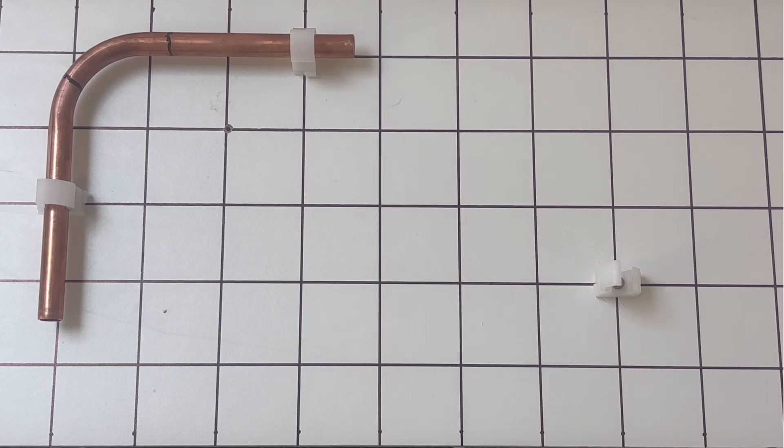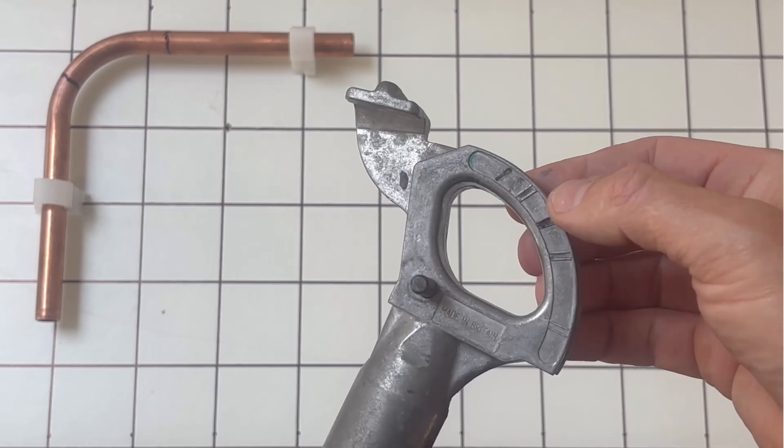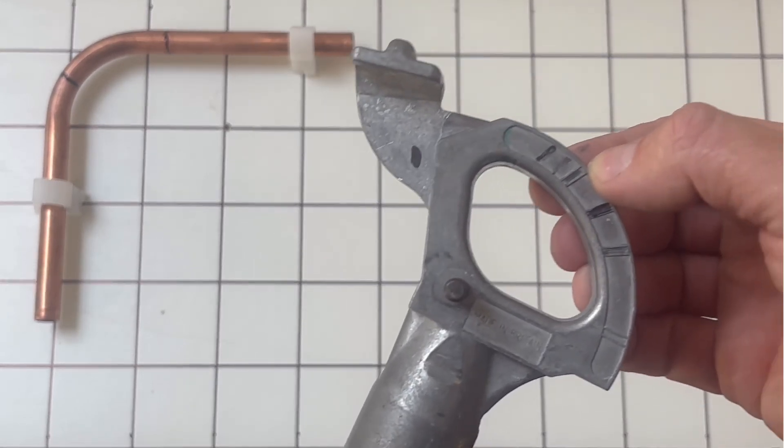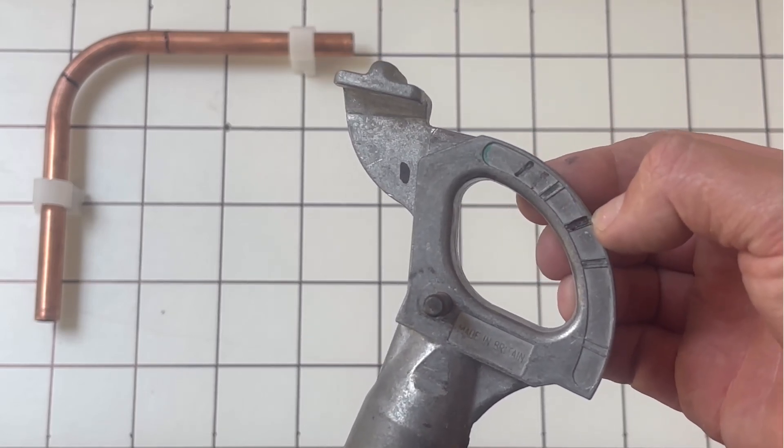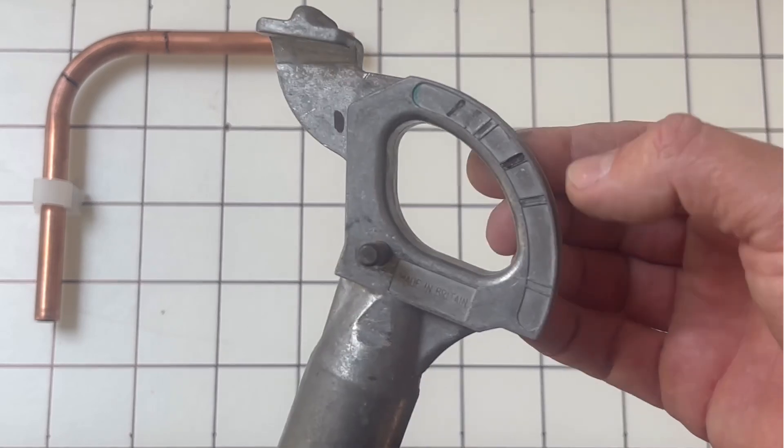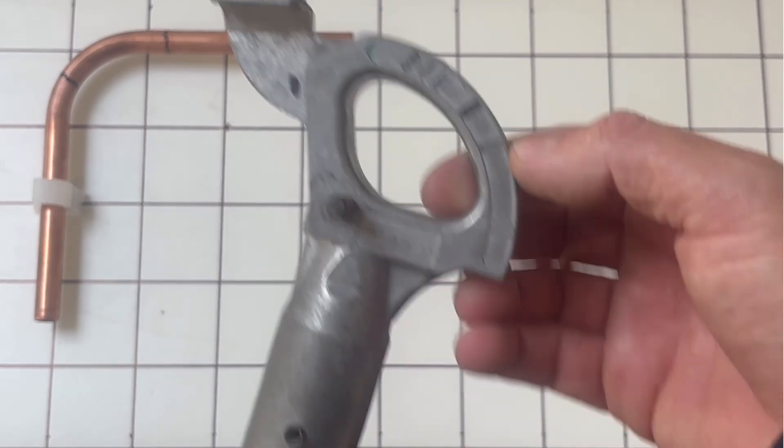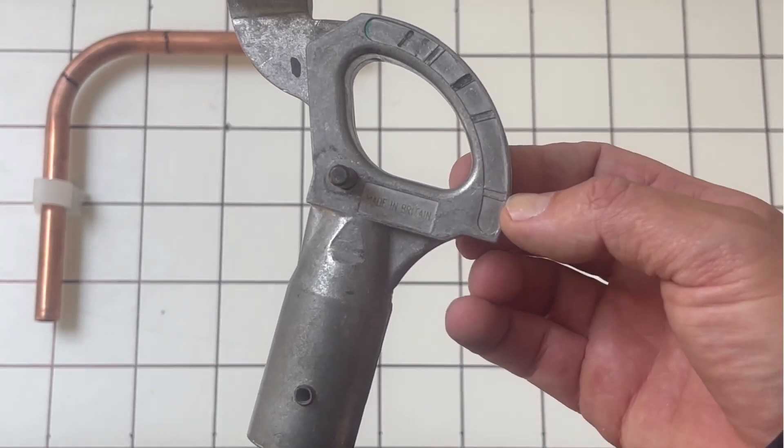So I'll explain to you on this bender. So on this Monument Masters bender you've got four markings. That marking there is a 30 degree bend. That marking there is a 45 degree bend. That marking there is a 60 degree bend.